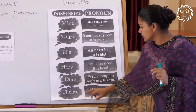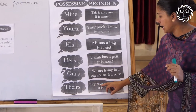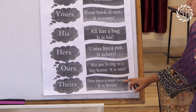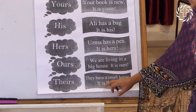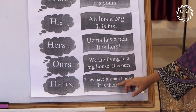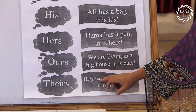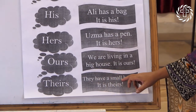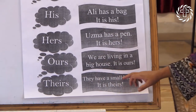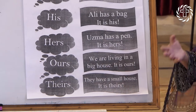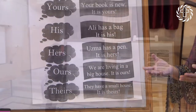Their: They have a small house. It is theirs. They have a small house. It is theirs. Unke — Unka hai.